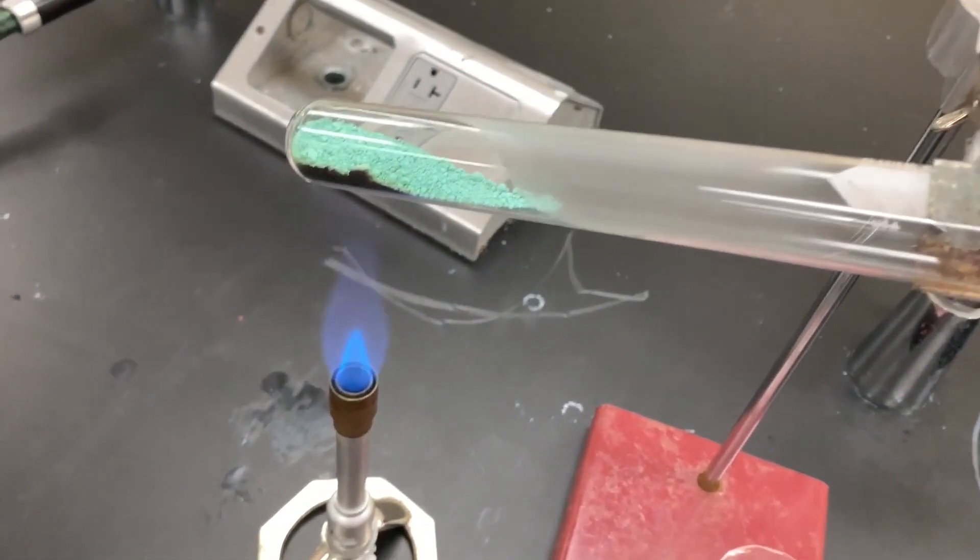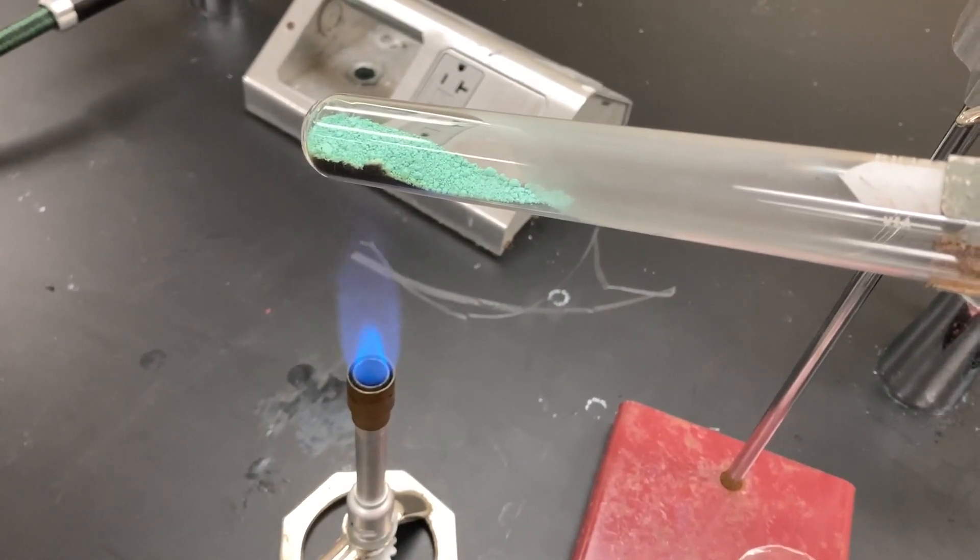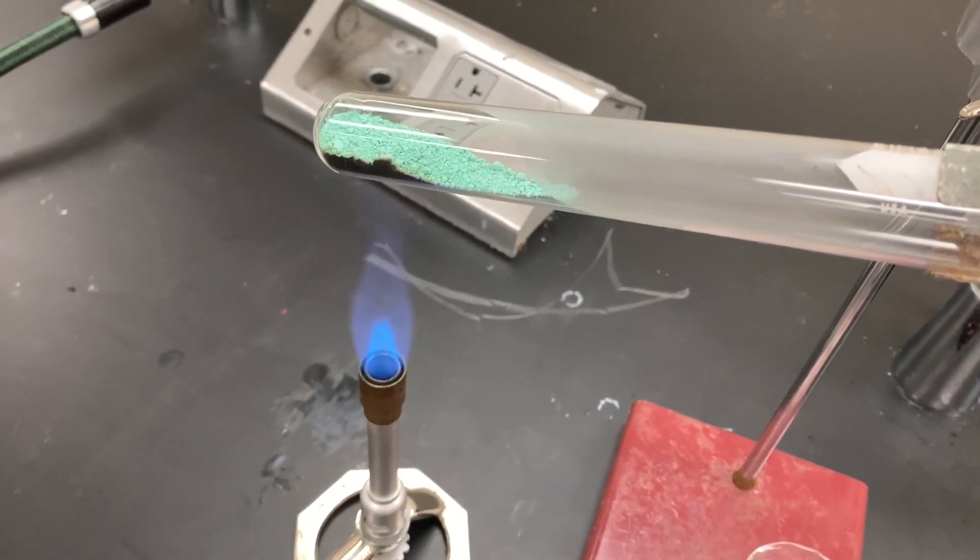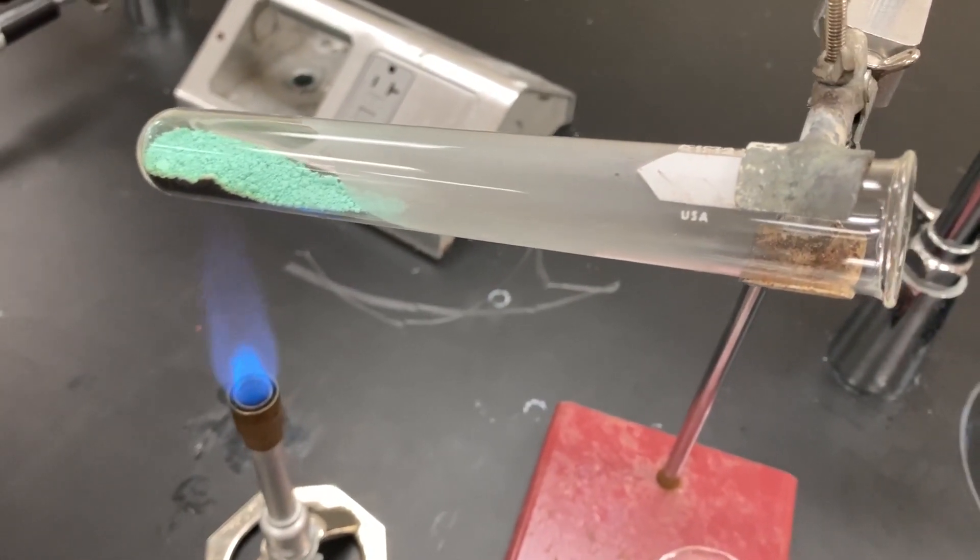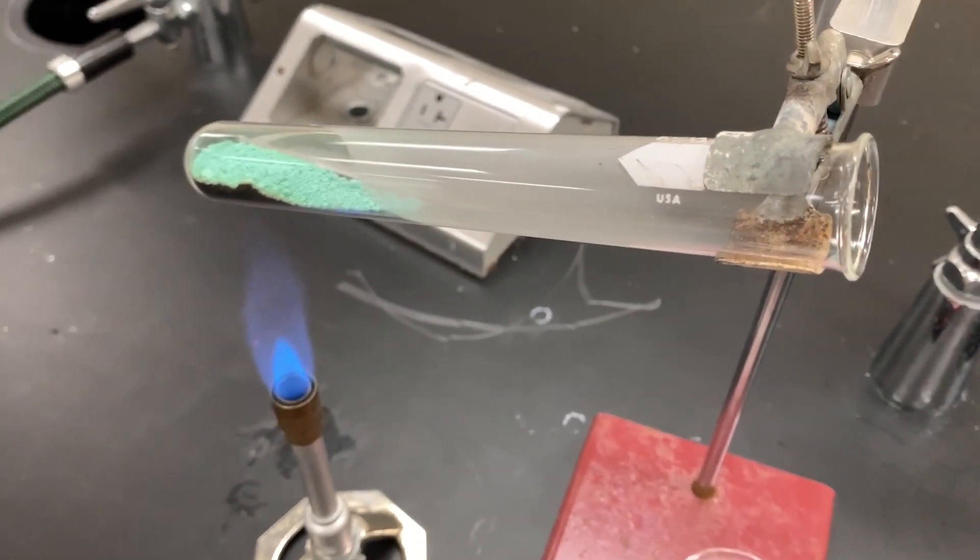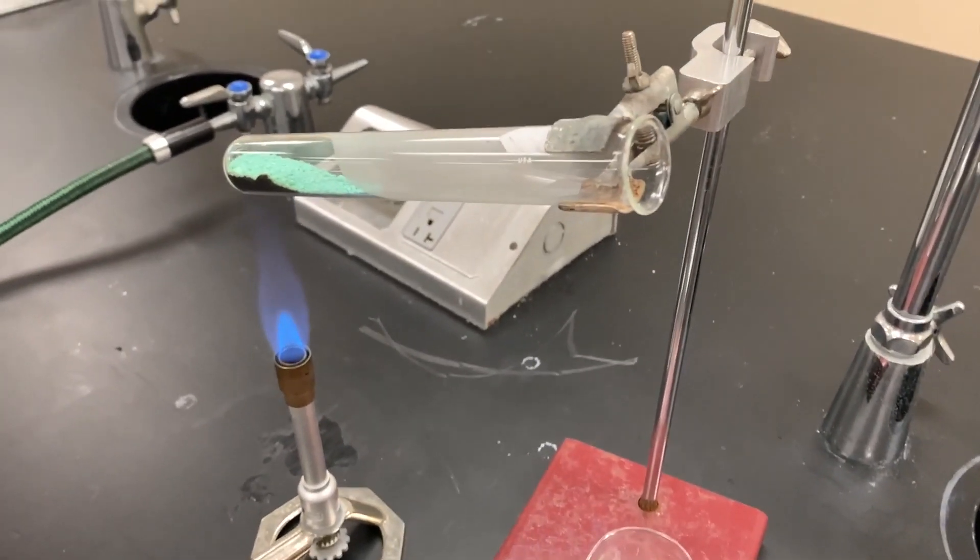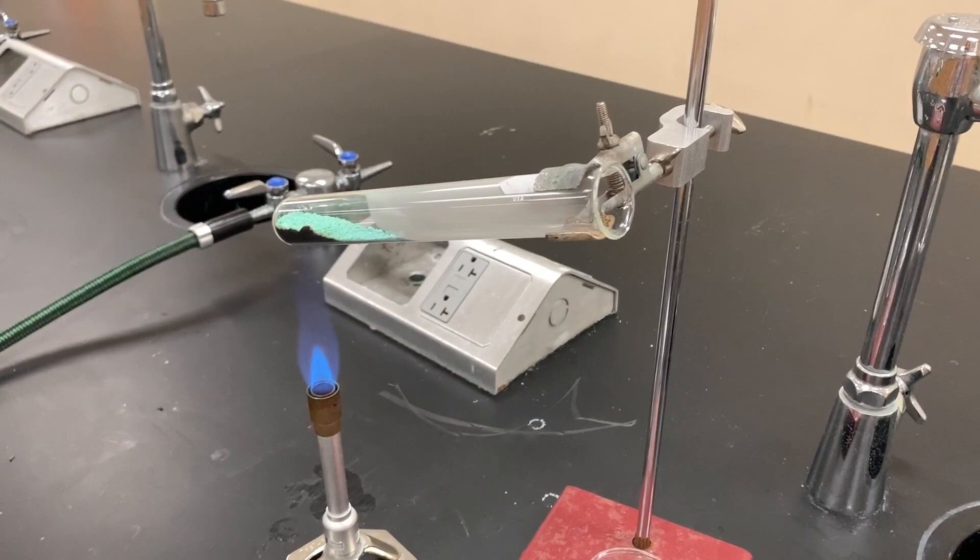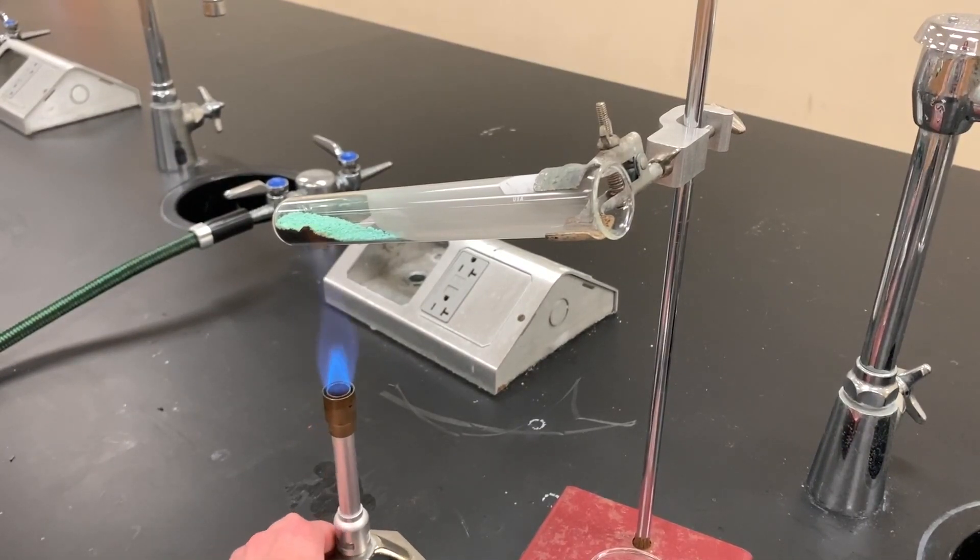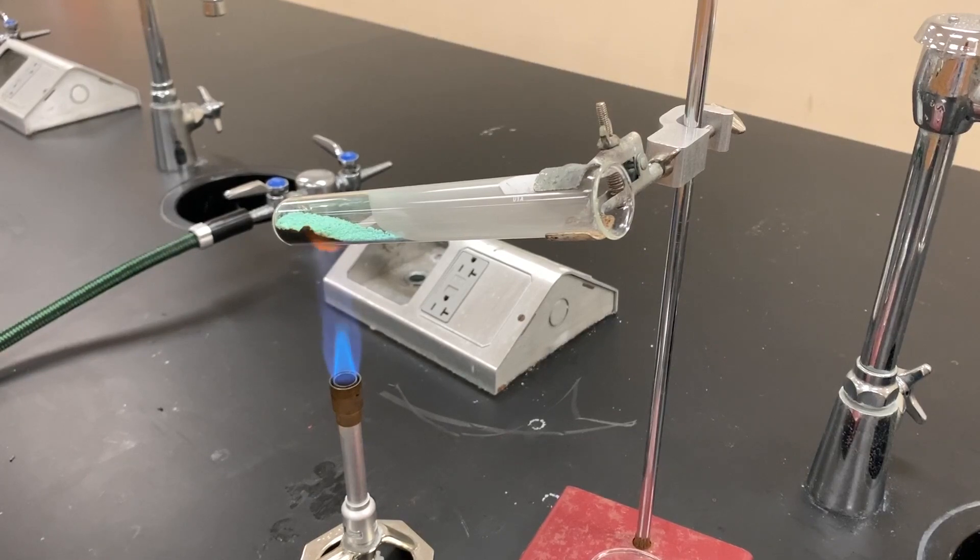You are seeing some evidence of the bluish green solid turning into a black solid. That looks like water condensing on the inside of the test tube. To test for carbon dioxide we have to do something different. I'm going to increase the heat and do two tests for carbon dioxide being present.